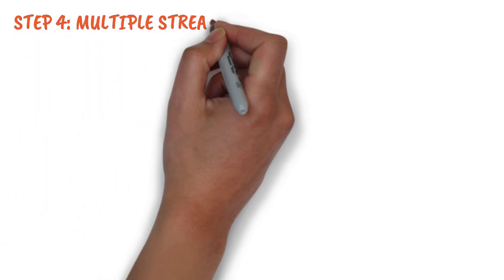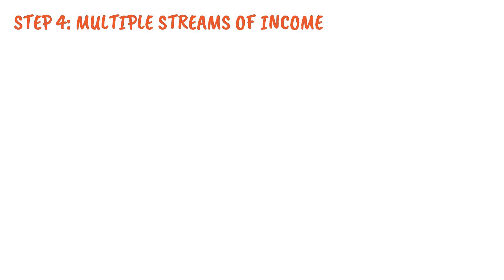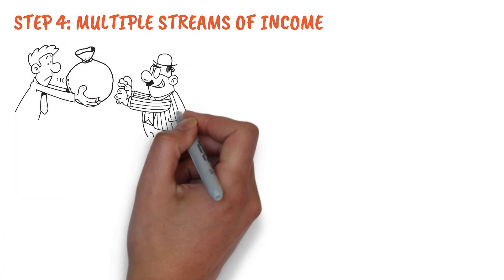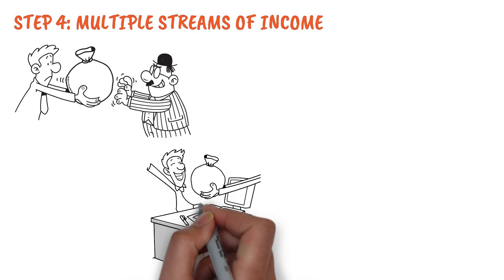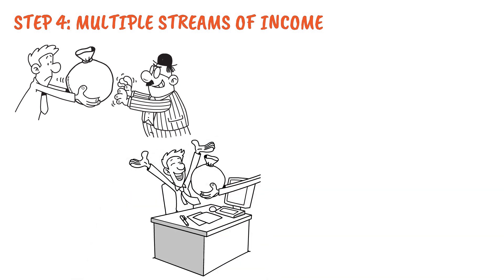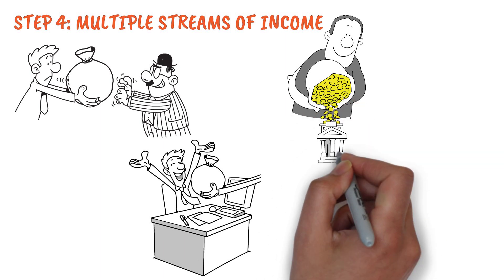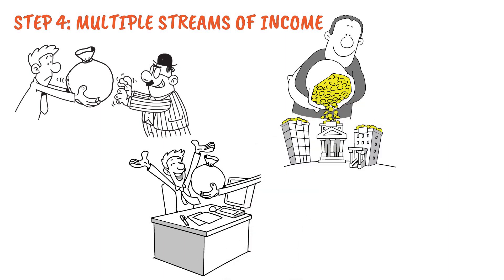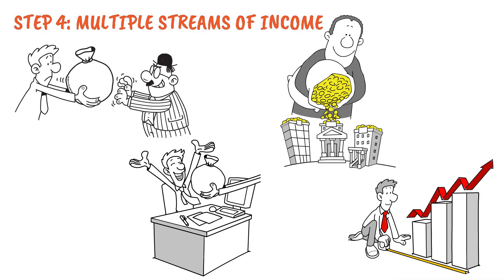Step 4: Multiple streams of income. Don't rely solely on your primary job to generate wealth. Explore additional income opportunities, such as starting a side business, investing in real estate, or even monetizing your hobbies online. Diversify your income streams and watch your wealth multiply.